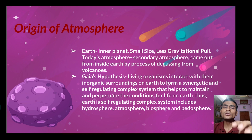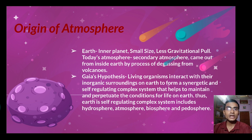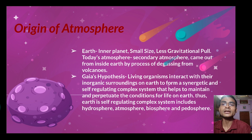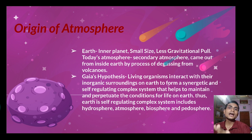Regarding the origin of atmosphere: Earth is an inner planet. The inner planets are Mars, Earth, Venus, and Mercury; outer planets are Jupiter, Saturn, Uranus, and Neptune. Earth is a very small-sized inner planet. The current atmosphere of Earth is a secondary atmosphere — the primary atmosphere was different. Through degasification and volcanic eruptions, the present atmosphere was formed. This secondary stage is sometimes also called a tertiary atmosphere.